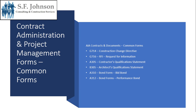Some common forms within the set include G714, construction change directive, which is used in place of a change order when all parties don't have time to agree, or the owner directs work to proceed and details are hashed out later. G716 covers RFIs. As noted in our RFI class, you should be able to review your RFI within your contract, and this is the specific form being referenced.